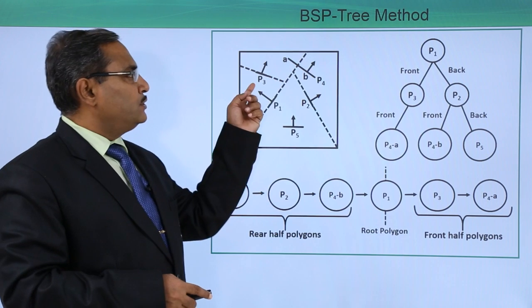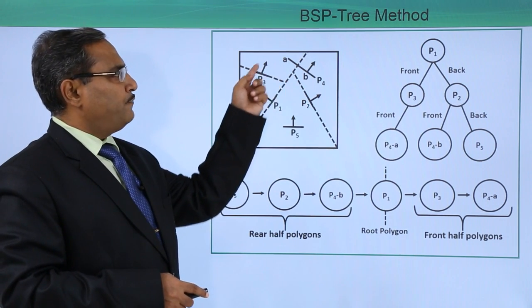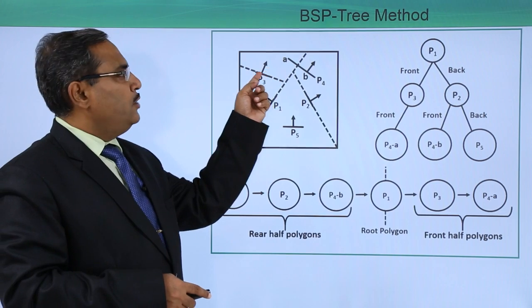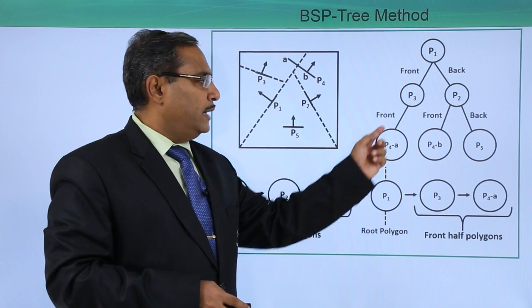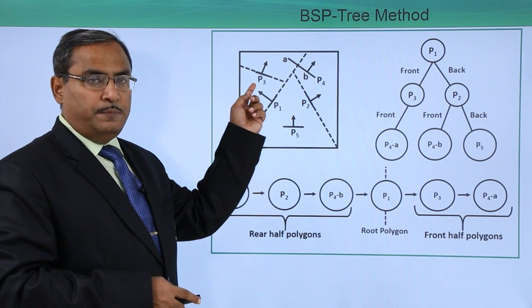Now consider P3. If you consider P3, then in the front you are getting P4a. In the front there are no other polygons, so P4a will be at the front, and there is a respective partitioning plane for this P3 polygon.